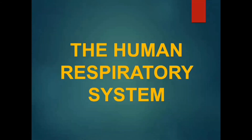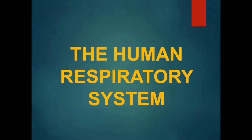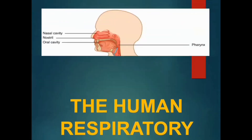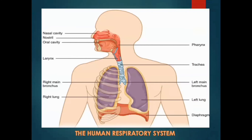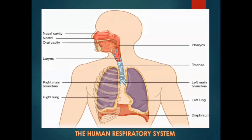Here in the illustration, we have nasal cavity, nostril, oral cavity, pharynx, larynx, trachea, right main bronchus, left main bronchus, right lung, left lung, and diaphragm.